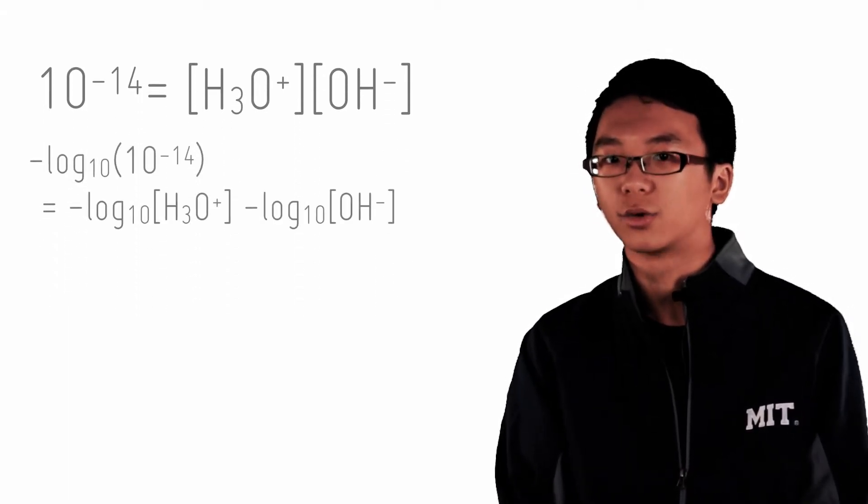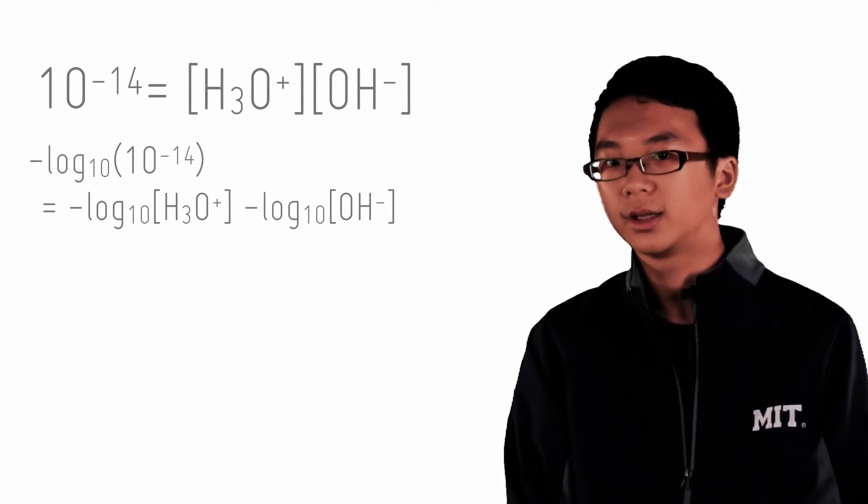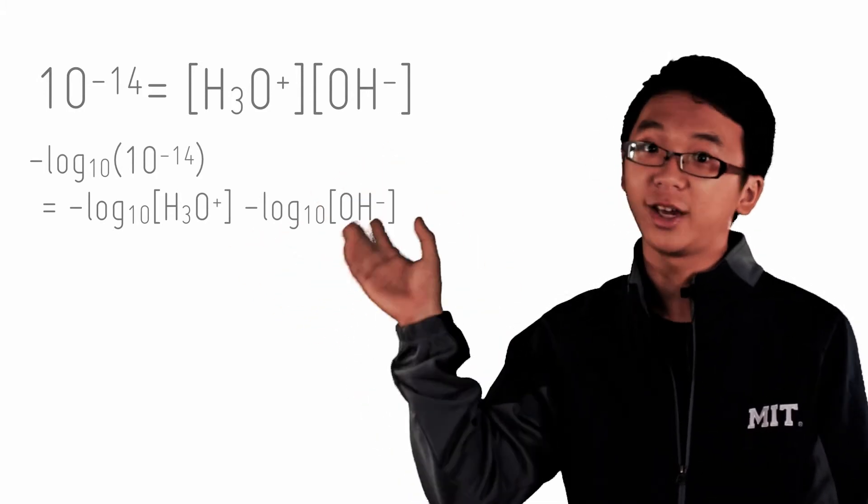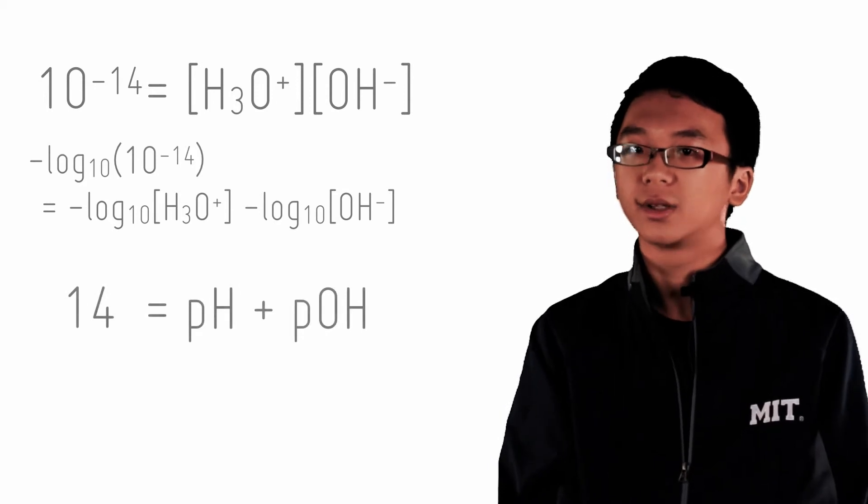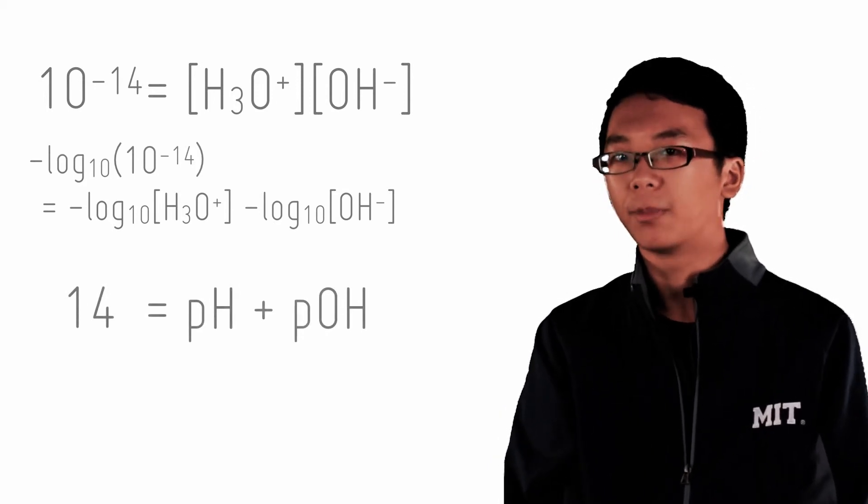Now, let's negative log 10 this whole thing. The logarithmic laws tell you that this can be expanded into the addition of two logarithms. And guess what? This is pH. This is pOH. And the left side can be evaluated to 14. So this tells you that pH and pOH at any one point in time must be 14.